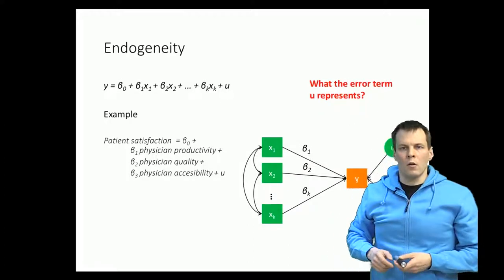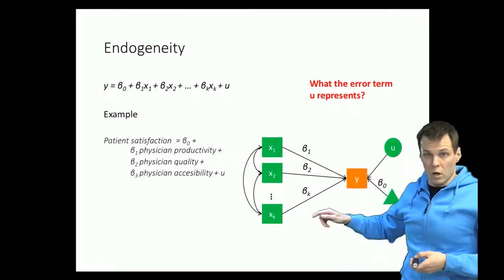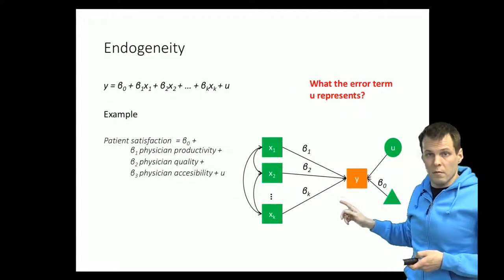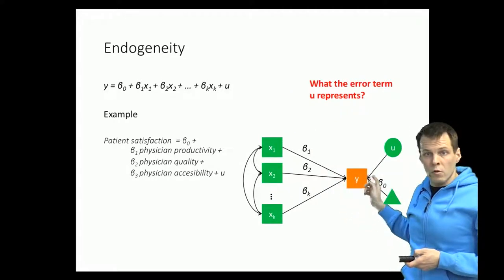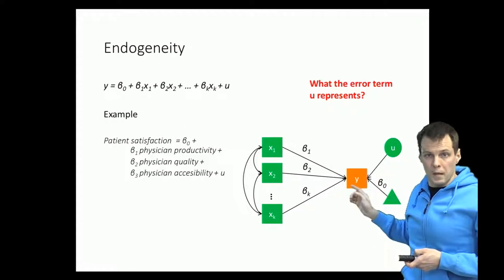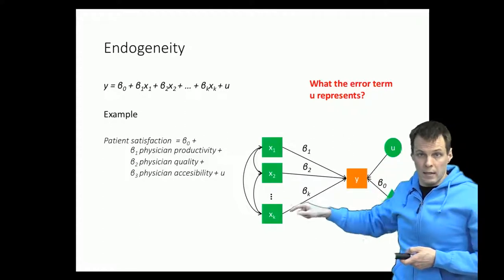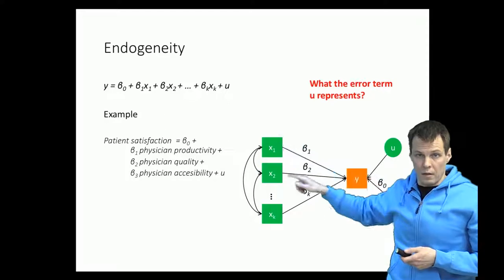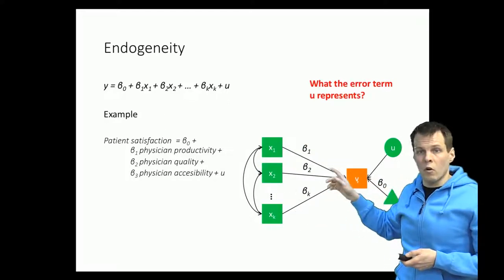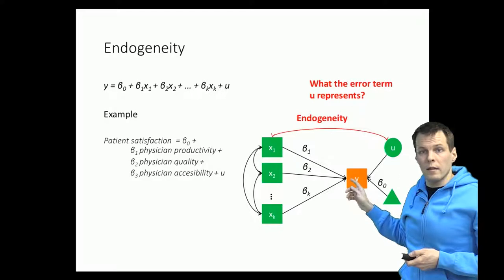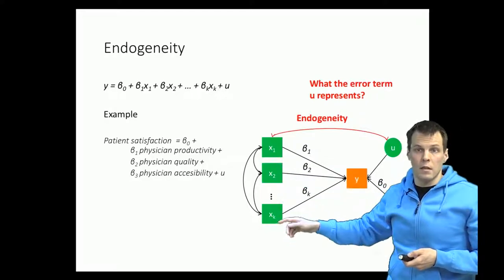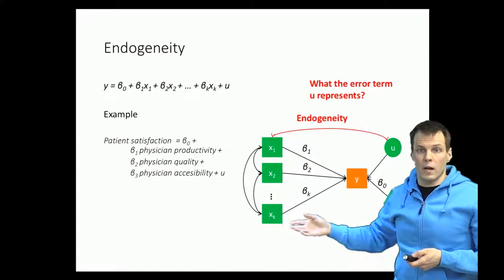Endogeneity occurs when we have a regression model such as the one shown graphically here as a path diagram. The error term u represents any other causes of y that are not included as explanatory variables. So if any other cause of y is correlated with any of the included variables x, then we have an endogeneity problem.